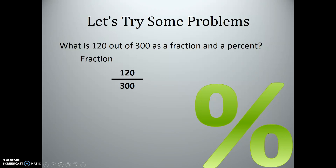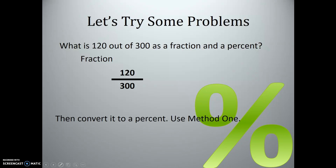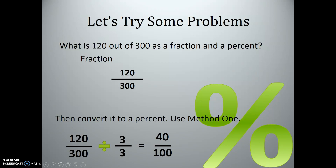Let's try 120 out of 300. Written as a fraction, that's 120 over 300. Converting to a percent using method one, we divide the numerator and denominator by 3, and we get 40 over 100, or 40%.